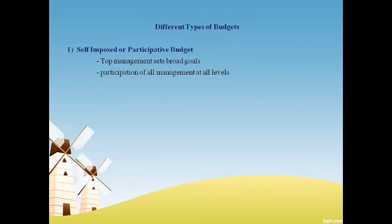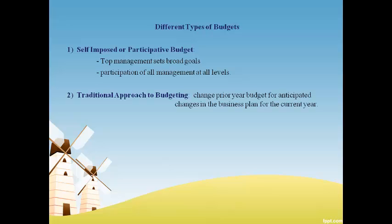The most common types of budgeting include, first, a self-imposed budget where top management sets the overall goals and management at all levels budget the resources required to accomplish the goal. The second is called the traditional approach, where this year's budget begins with last year's budget and is revised to incorporate changes in the strategic business plan for the upcoming year.